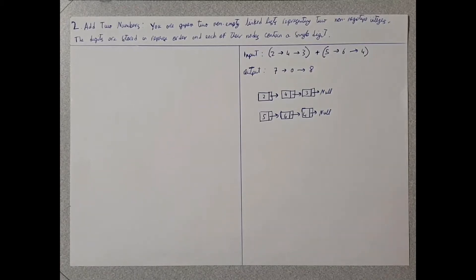The question says you are given two non-empty linked lists representing two negative integers. The digits are stored in reverse order and each of their nodes contain a single digit.